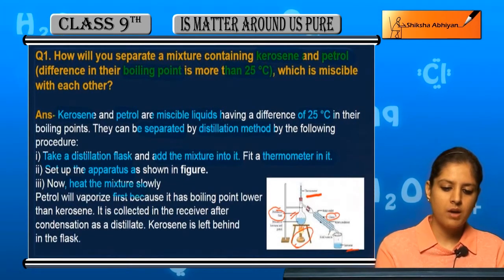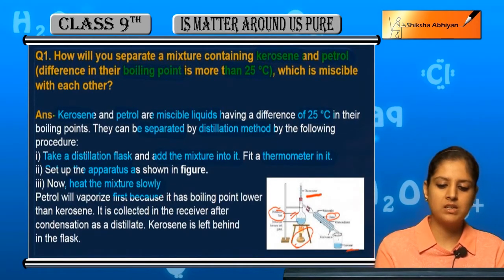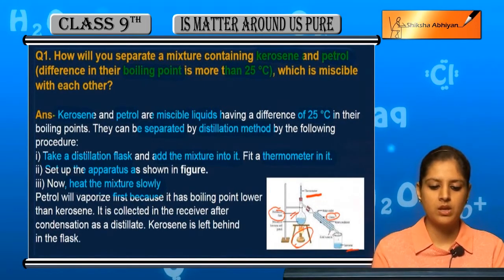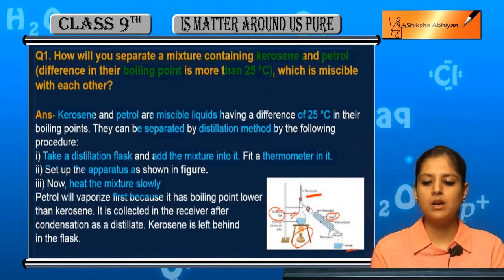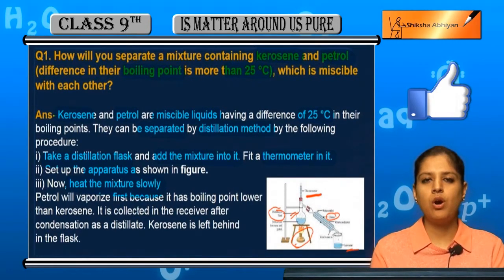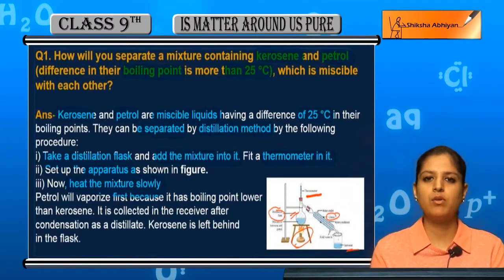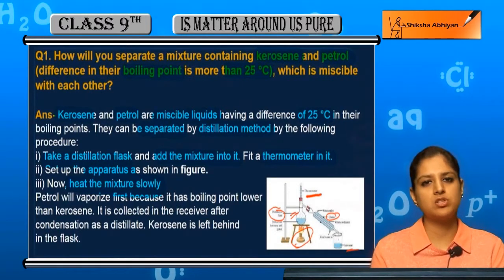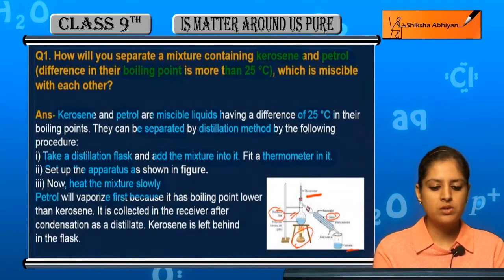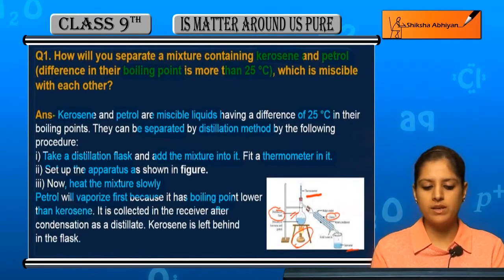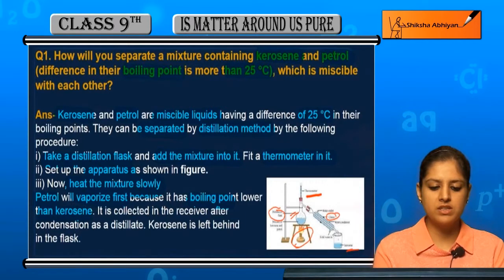Now we heat the mixture of petrol and kerosene slowly. Both have different boiling points, which means they will boil at different temperatures. Petrol will be vaporized first because its boiling point is lower than that of kerosene.